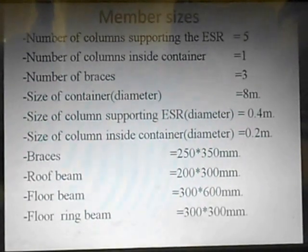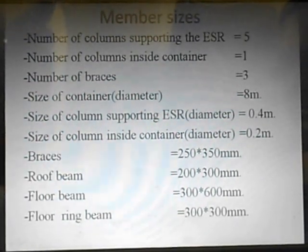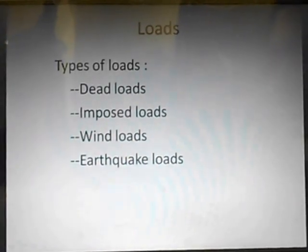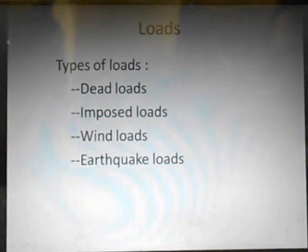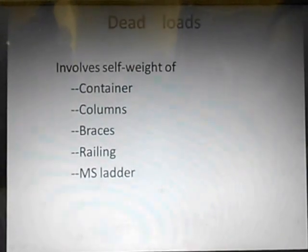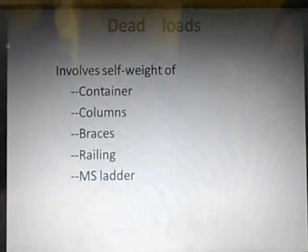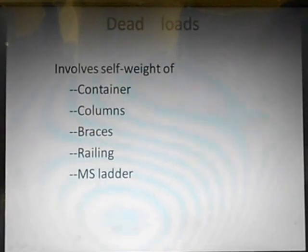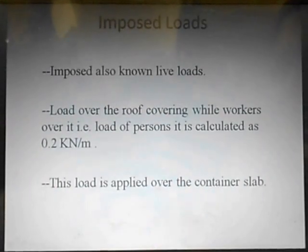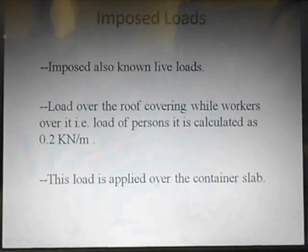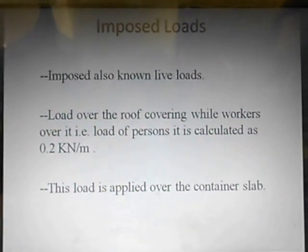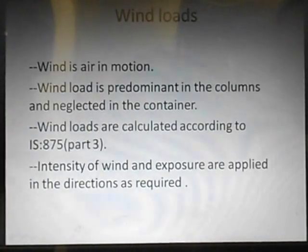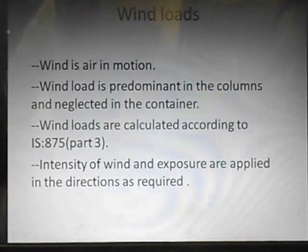These are the member sizes. These are the various types of loads acting on the structure: dead loads, imposed loads, wind loads, and earthquake loads. Dead load is the self-weight of the container, columns, braces, railing, and MS ladder — the railing is built for support and the MS ladder for carrying persons to the top of the tank. Imposed loads are the loads from personnel who come onto the tank for cleaning purposes, estimated at 0.2 kN per meter. Wind load is air in motion; it is prominent in the columns and neglected in the container.